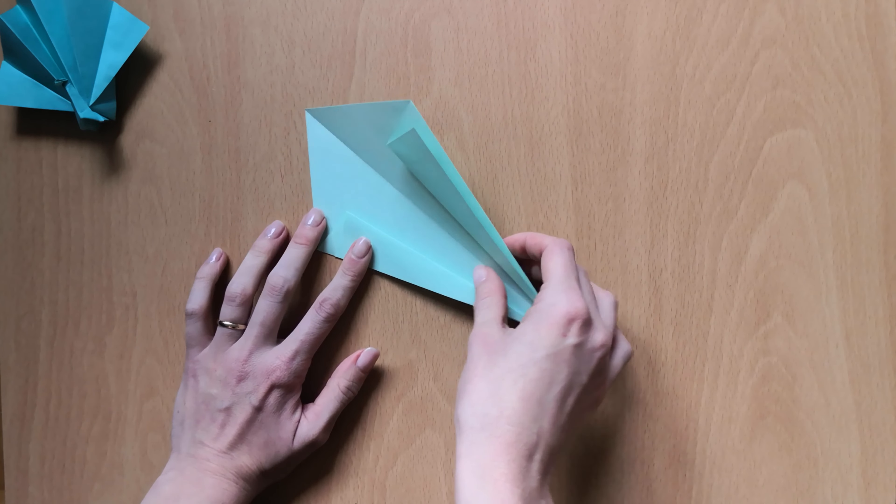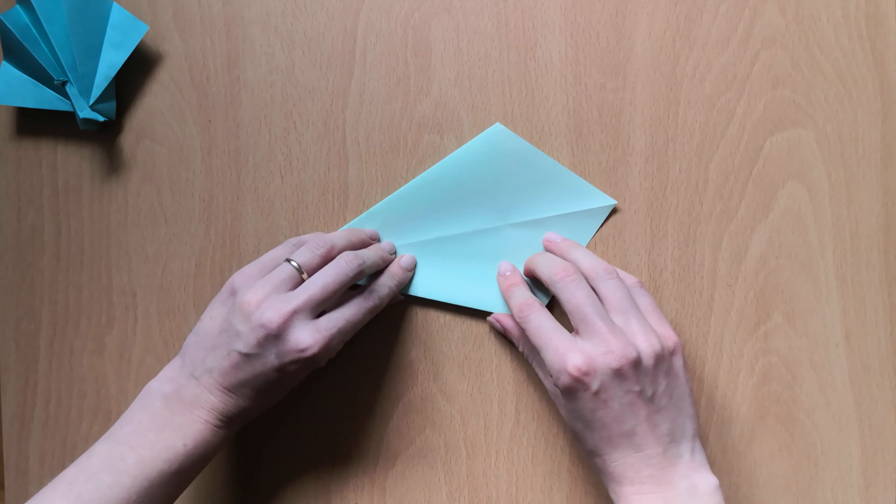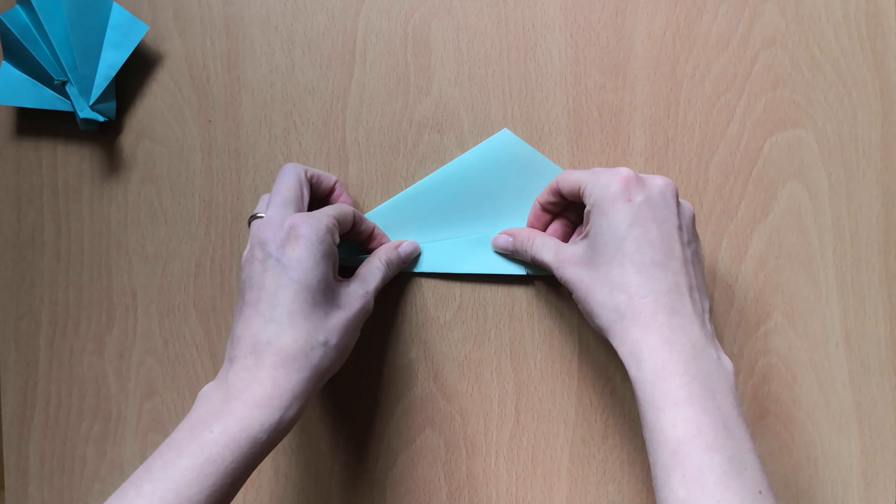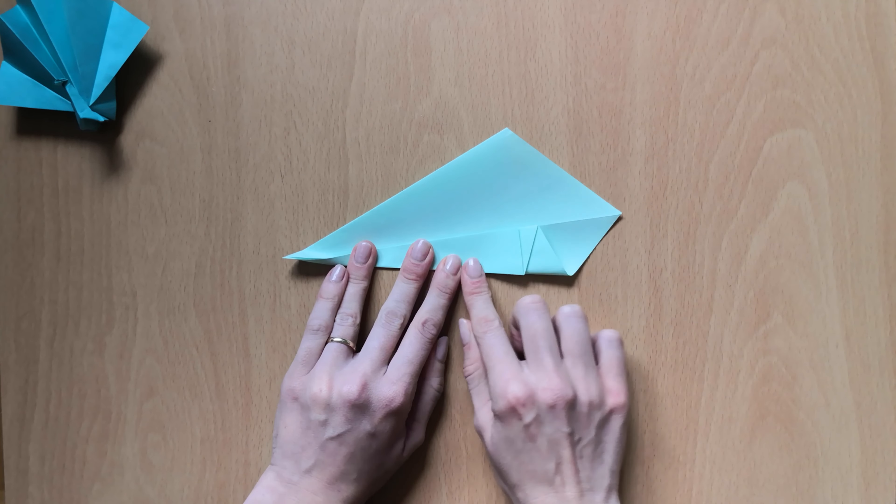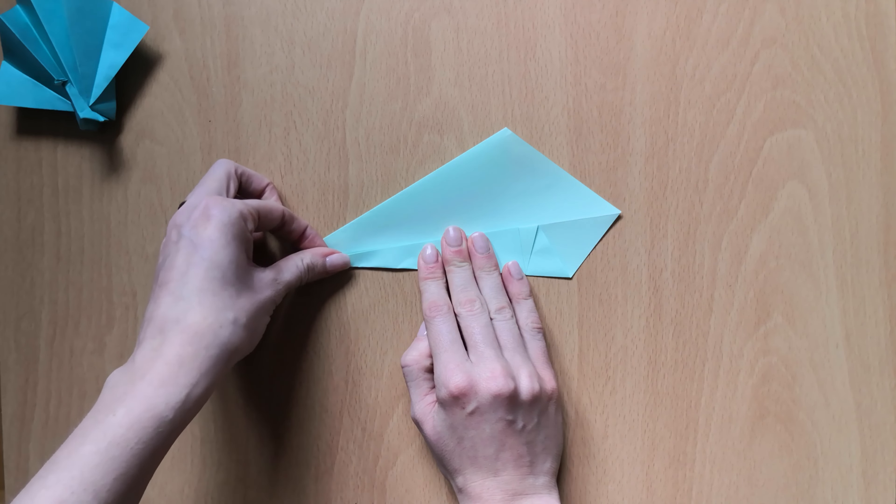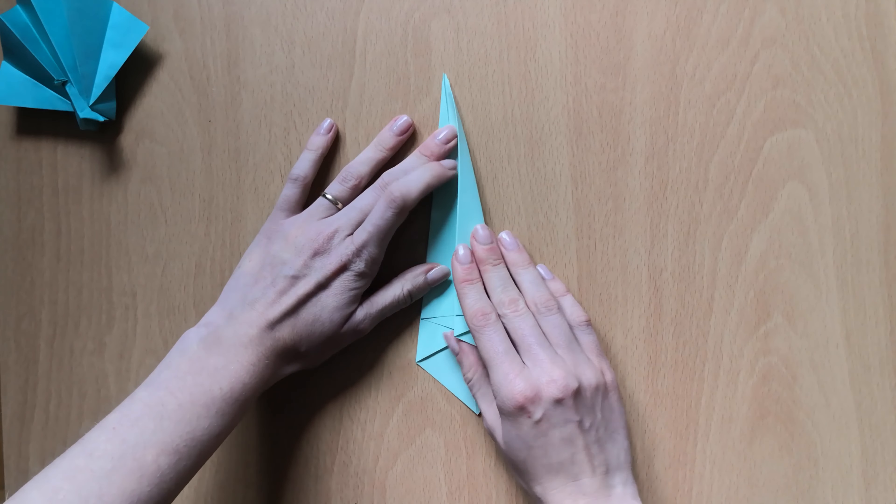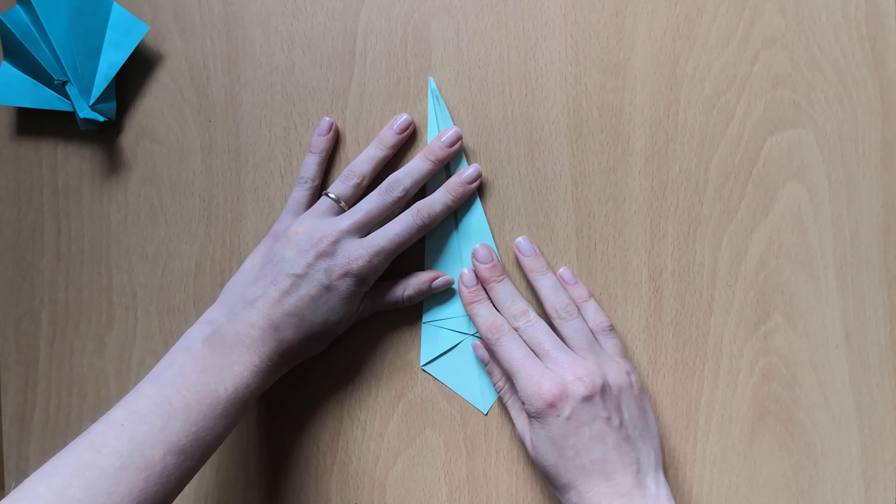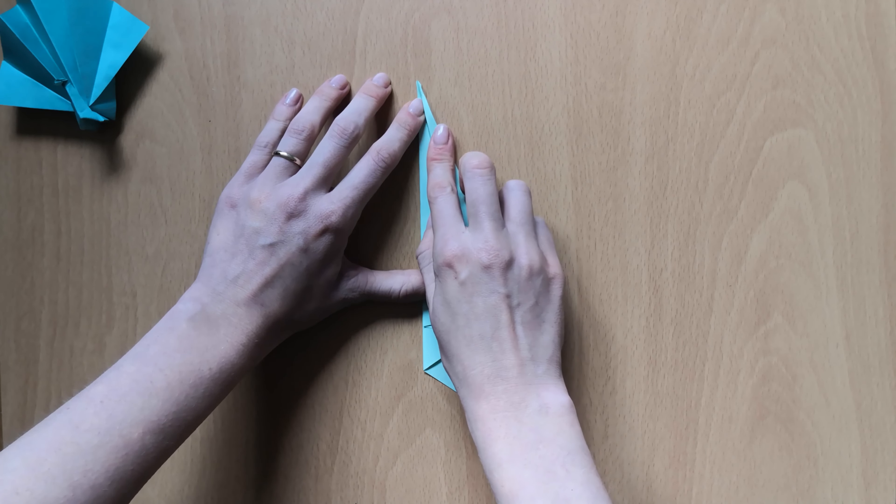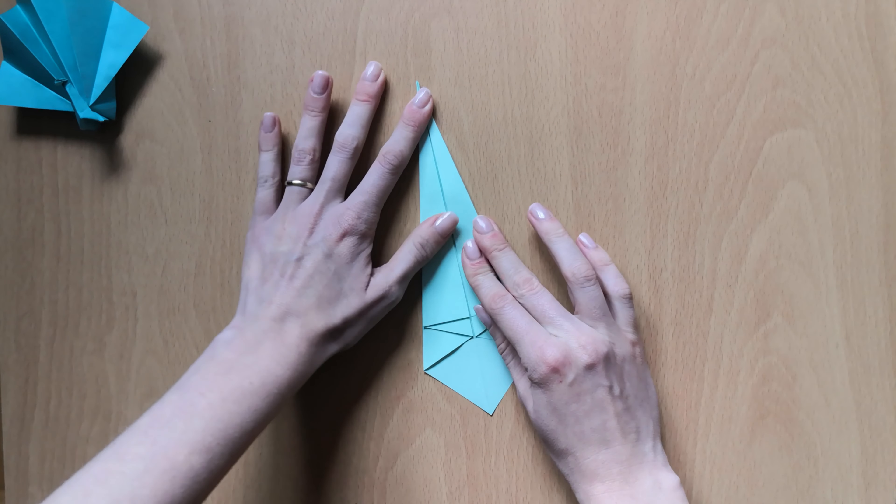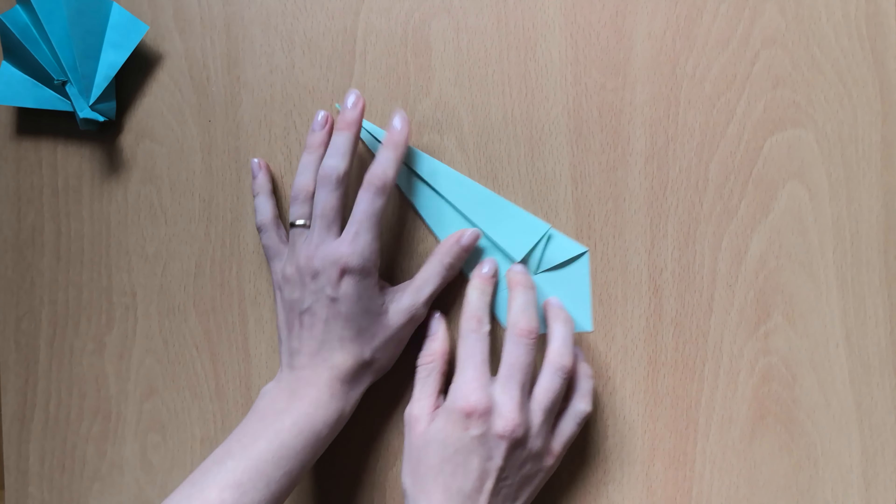Now we'll turn our paper around and again bring the sides of the paper into the middle line. So bring one side and bring the other side. Just like this.